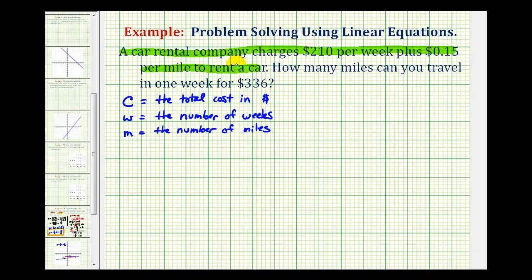So the equation for this situation would be big C, the total cost, is going to be equal to $210 times the number of weeks. So that would be 210W plus 15 cents per mile, which would be 0.15 times M.